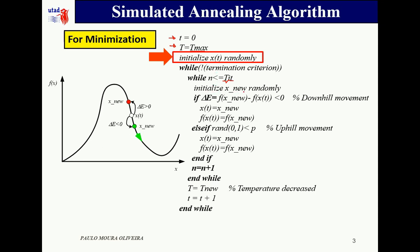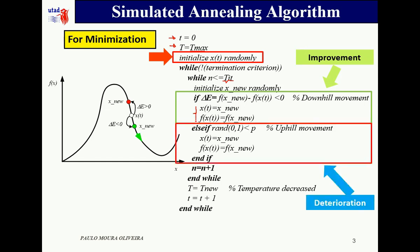The procedure initializes a new solution and tests it. If the solution is an improvement, a downhill movement, we accept it all the times as the current solution. Else, if it is an uphill movement, we are going to accept some depending on a probability value p and a random value less than this probability value.